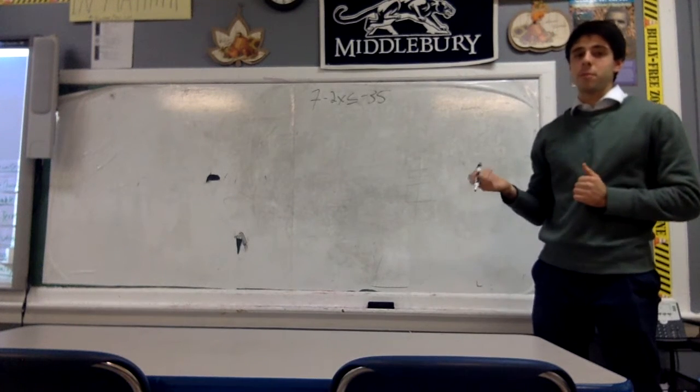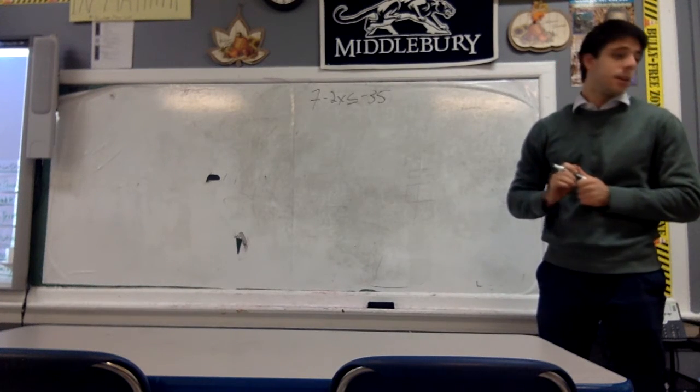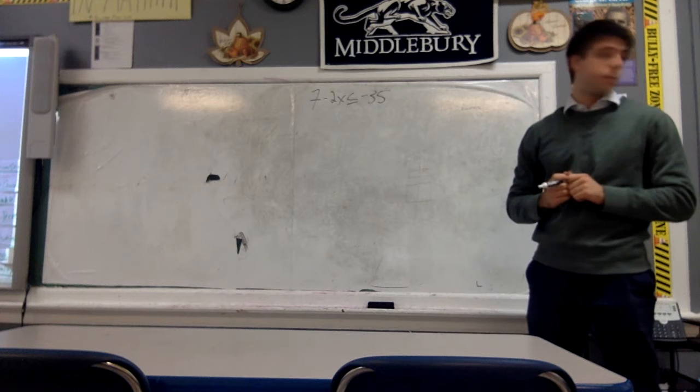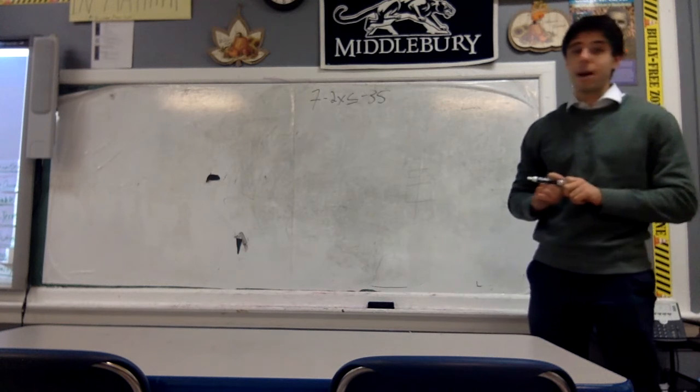Hi everyone, for our second problem, we're going to do 7 minus 2x is less than or equal to negative 35, which is question number 3 from our homework.